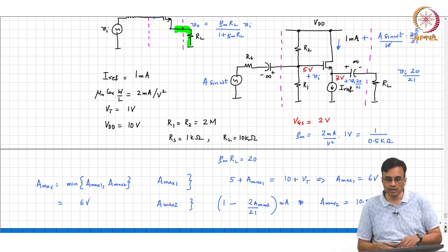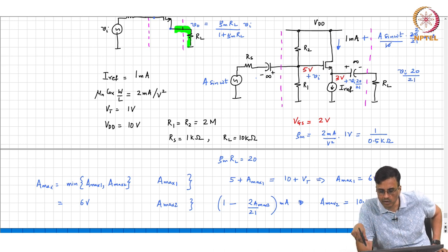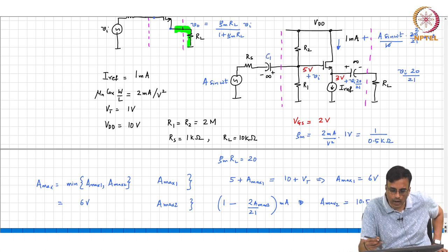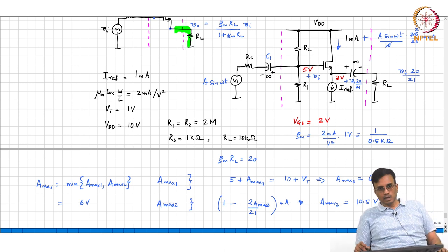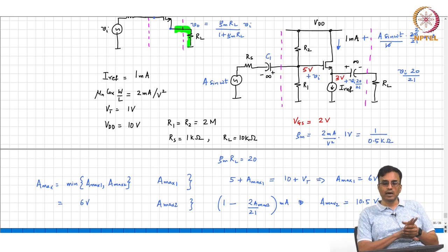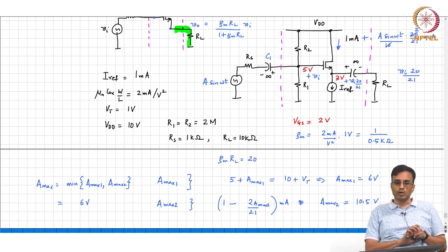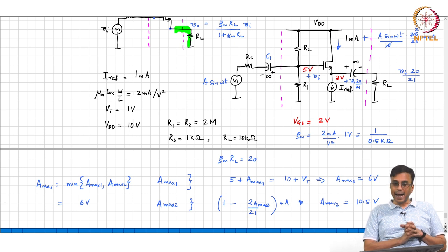Now for the infinite capacitors. For input capacitor C1, its impedance must be much smaller than the Thevenin resistance across its terminals, which is R_s + R1 ∥ R2 ≈ R1 ∥ R2 ≈ 1 MΩ (since R_s = 1 kΩ is much smaller). So at the lowest frequency ω: 1/(ω·C1) must be much smaller than 1 MΩ.